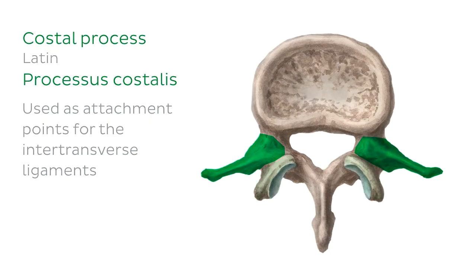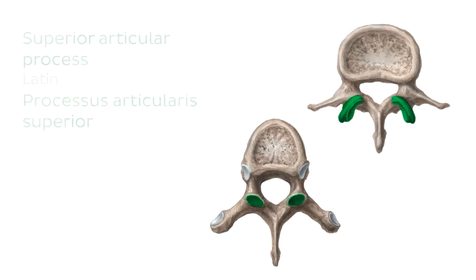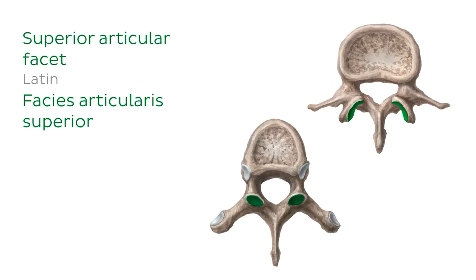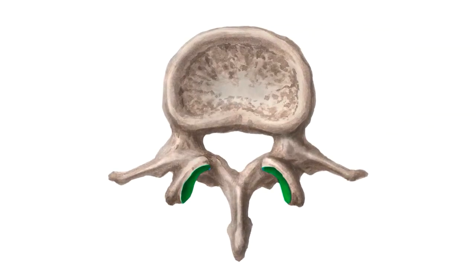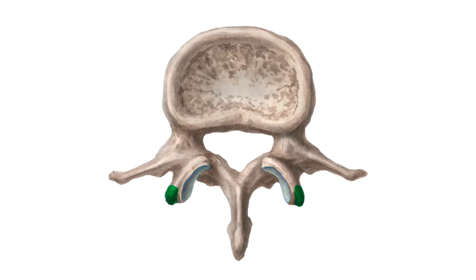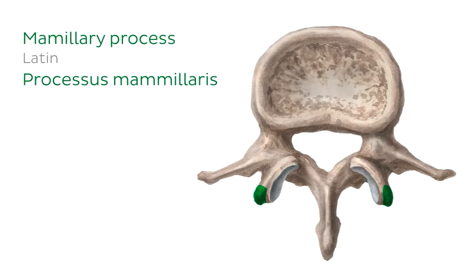The next process is the superior articular process, highlighted in green on both the thoracic and lumbar vertebrae. The superior articular processes articulate with the inferior articular processes of the vertebrae directly above via their superior articular facets. The thoracic vertebrae have flat superior articular facets that face posteriorly, whereas the lumbar vertebrae have concave superior articular facets that face posteromedially. This orientation difference is reflected in their range of movement. A structure unique to the lumbar vertebrae is the mammillary process — a small round elevation on the posterior aspect of the superior articular process, serving as a site of muscle attachment.